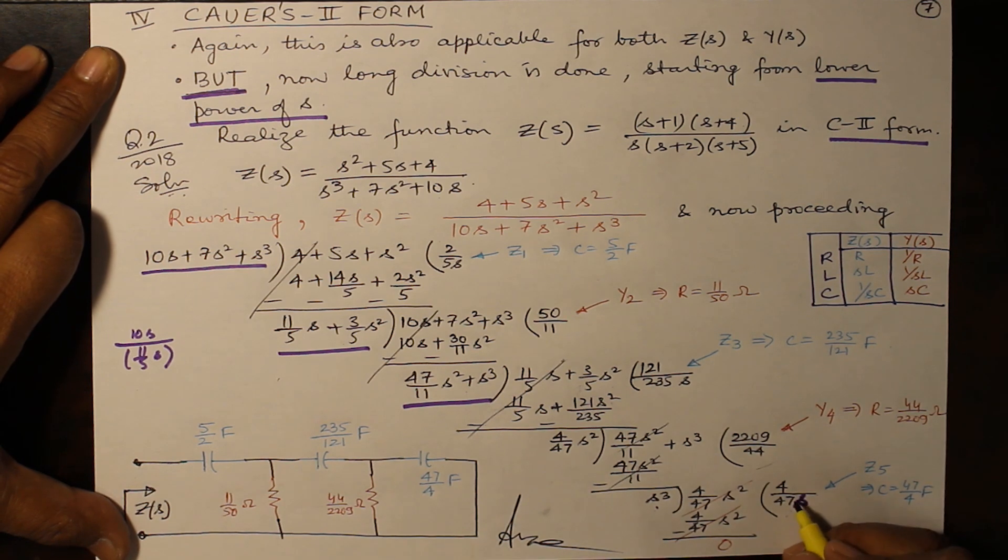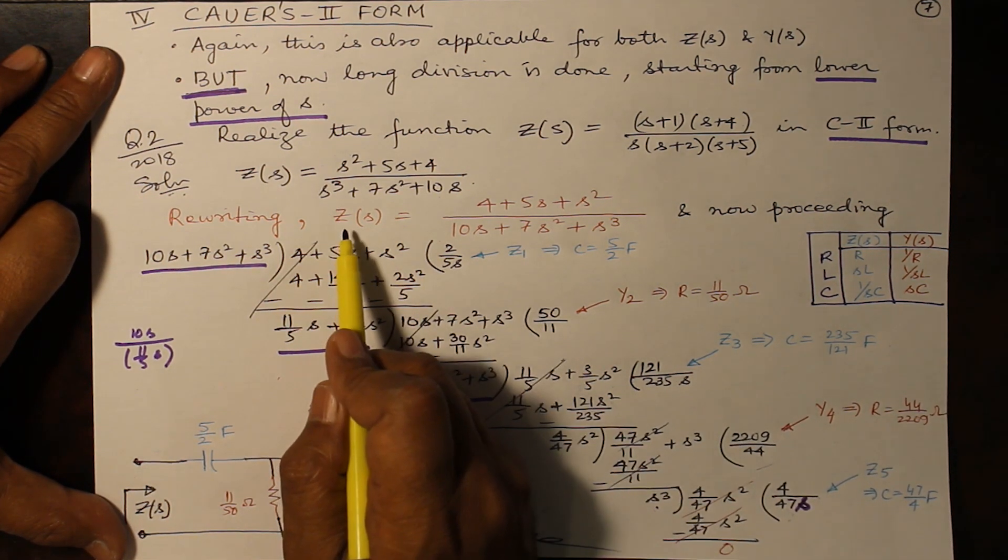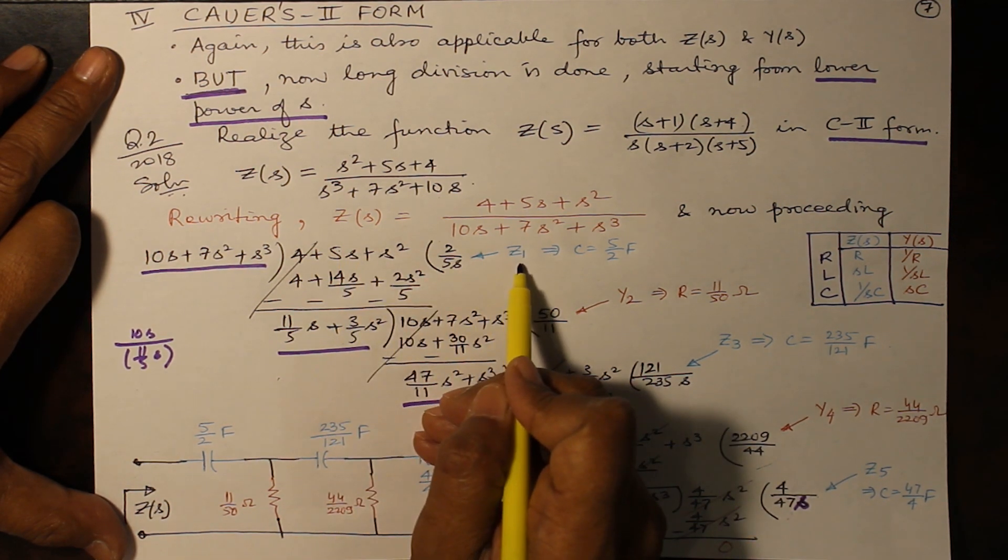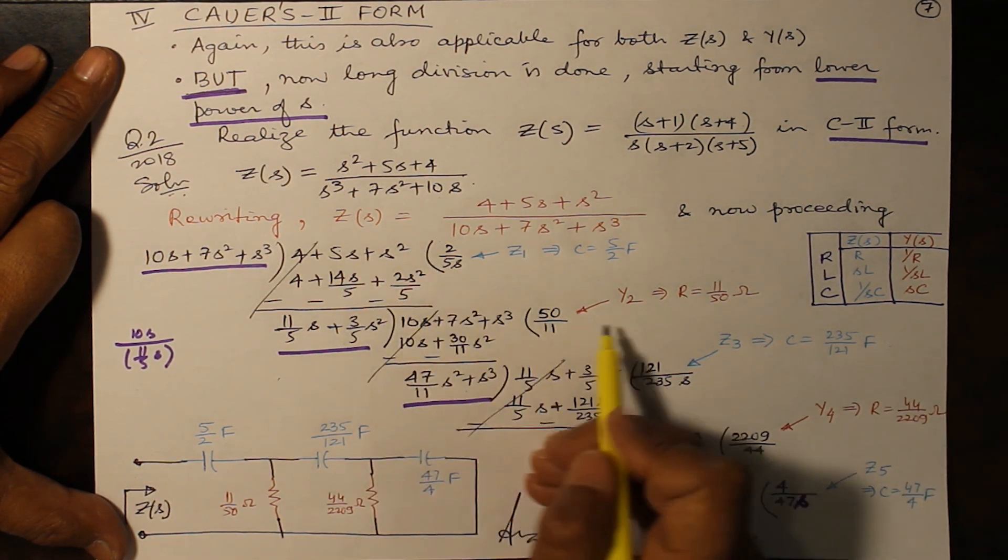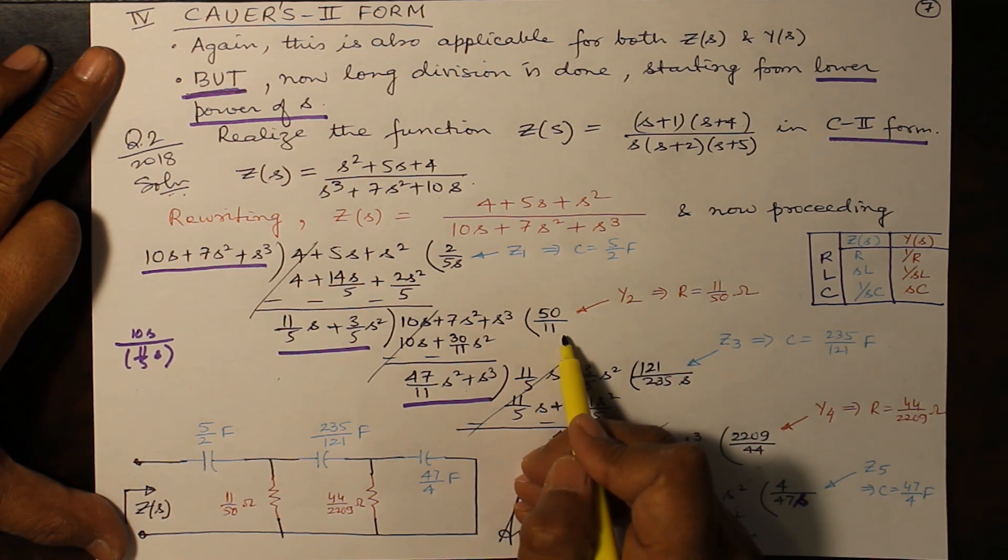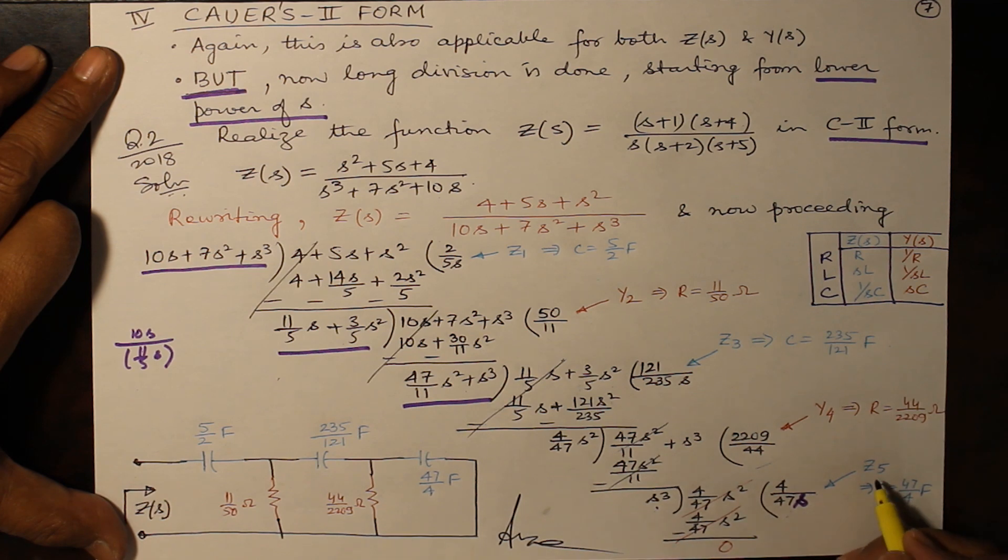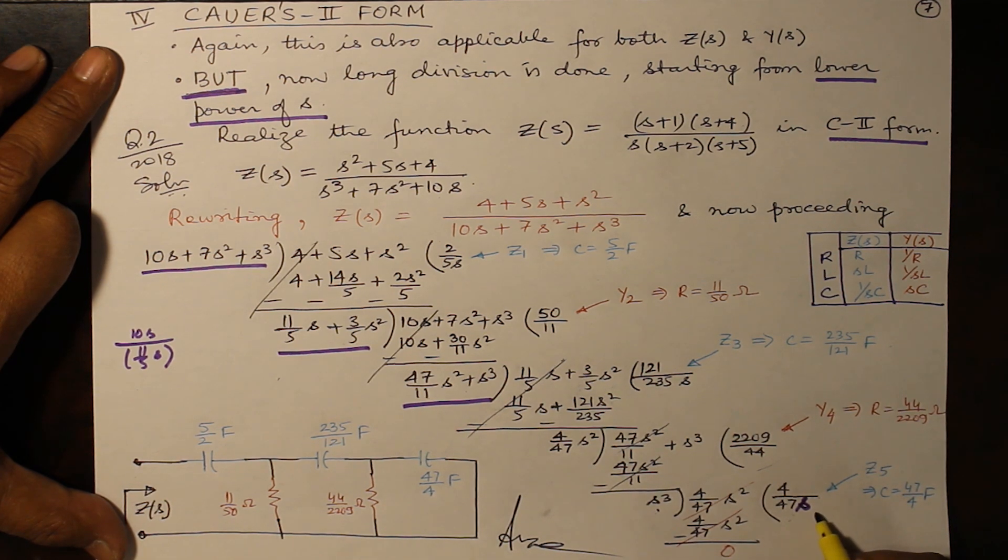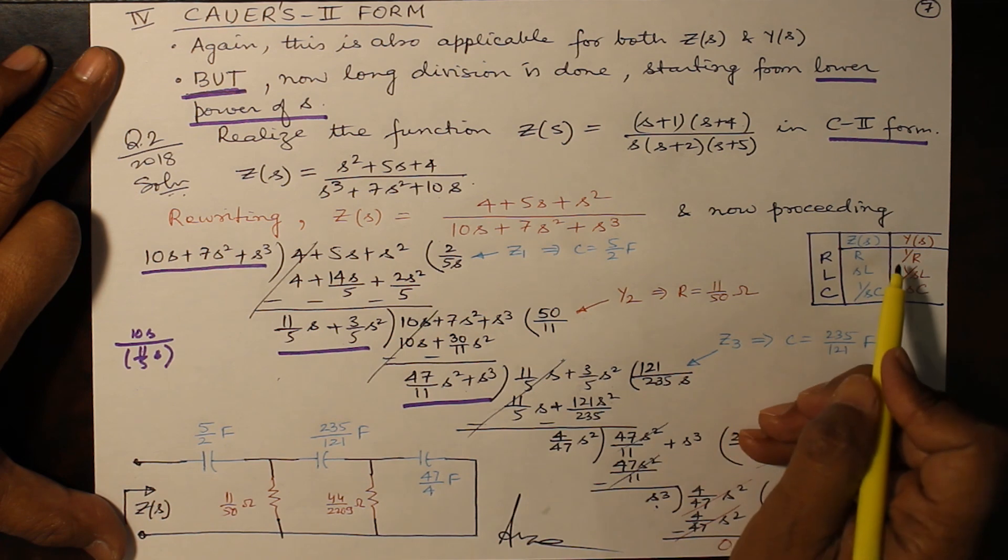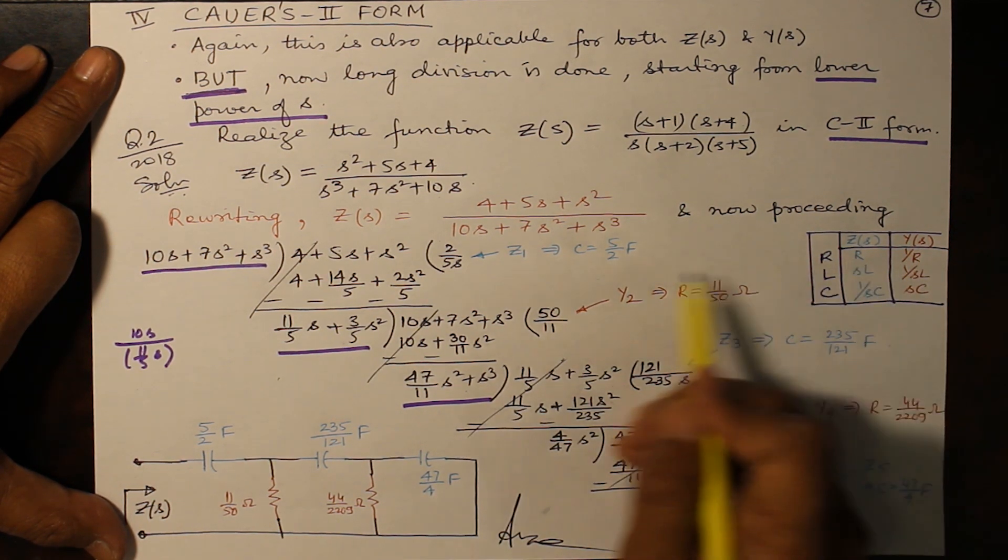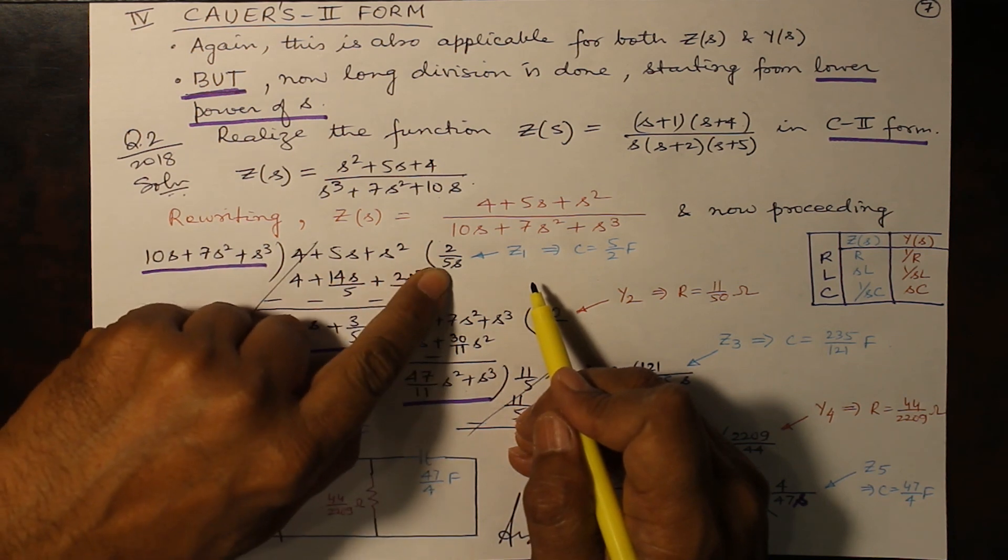So from this, since we had started from Z(s), the first term will be impedance function Z1(s), the second term is Y2(s) = 50 by 11, third term is Z3(s), fourth Y4(s), fifth term is Z5(s).